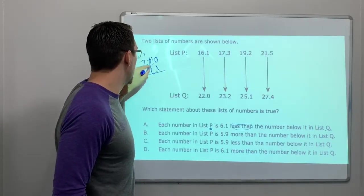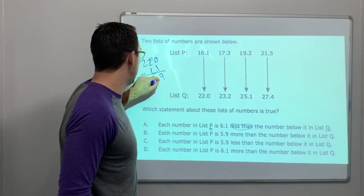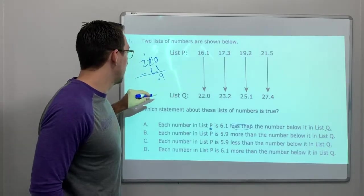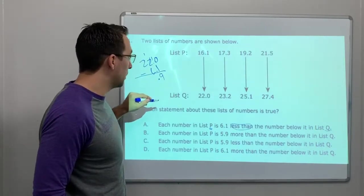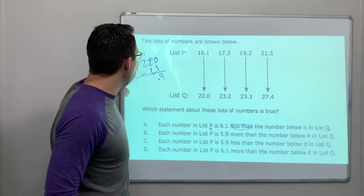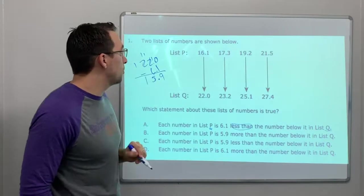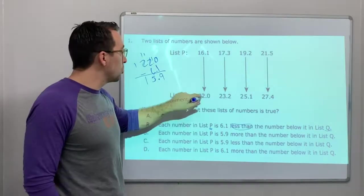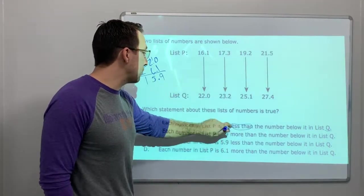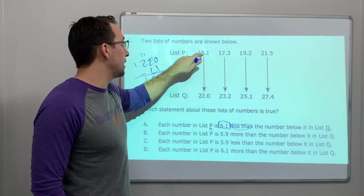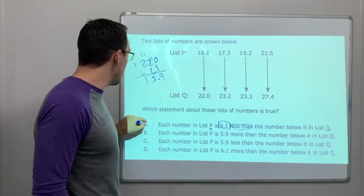1, 9. Hmm. This is, oh, yeah. 9, 1, 15.9. That's wrong. 22 minus 6.1 is 15.9, not 16.1. So, A is wrong.